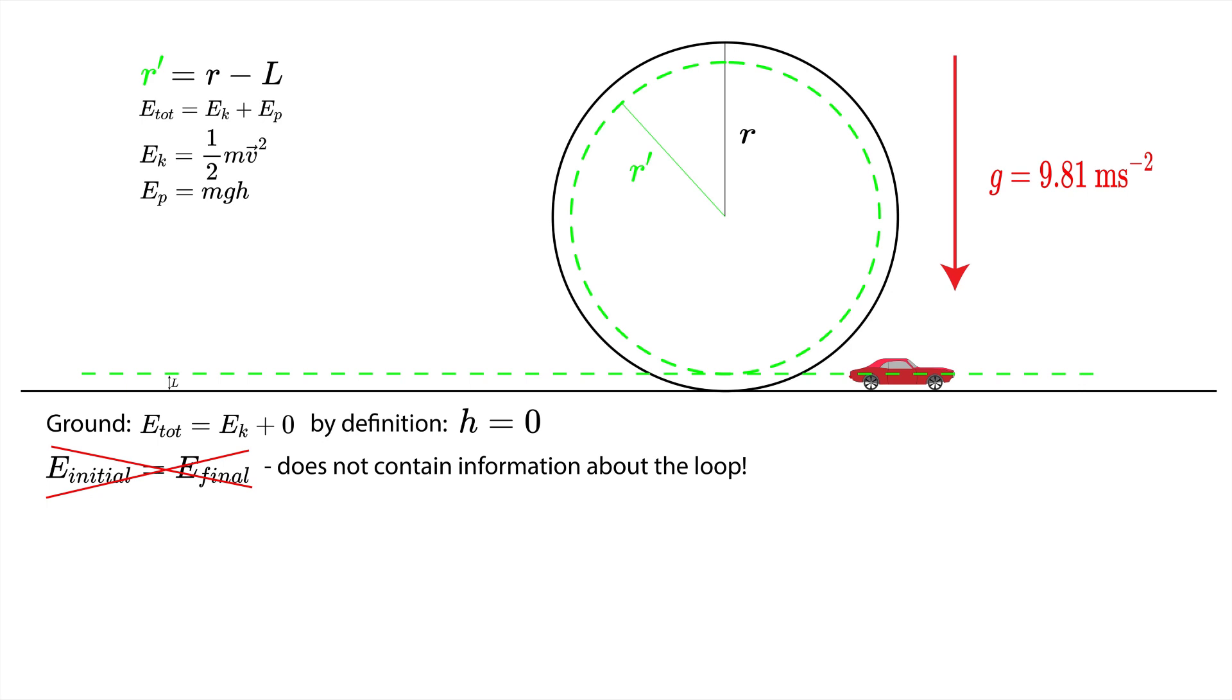What we need is to investigate the car's energy at the extremes of its potential energy, which means the lowest and the highest potential energy. Obviously the lowest potential energy is on the ground, so it is one extreme, and the highest potential energy is going to be on the top of the loop.